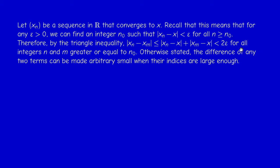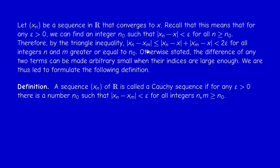If I wanted exactly ε, I should have taken ε/2 at each step. We now have a beautiful condition that does not depend on the limit. A sequence satisfying this condition is called a Cauchy sequence.